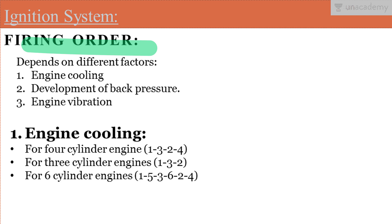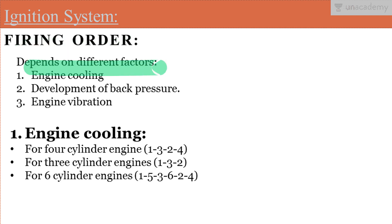The firing order depends upon the number of cylinders, and every engine should fire once in every cycle. In a 4-cylinder engine, firing occurs at every 180 degrees rotation of the crank. If we are considering more than 4 cylinders, less time is needed between firings. There are some factors on which the firing order of the engine depends.